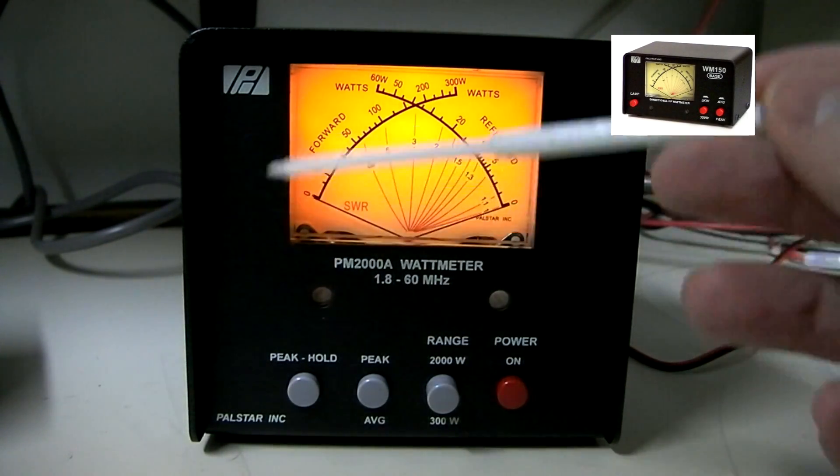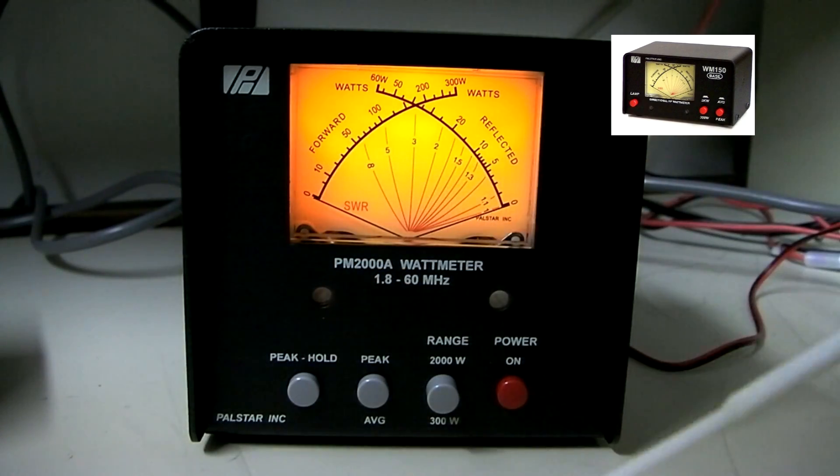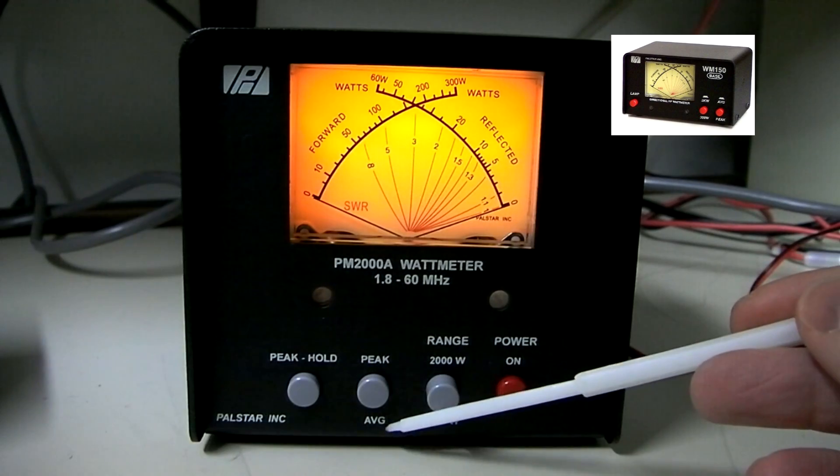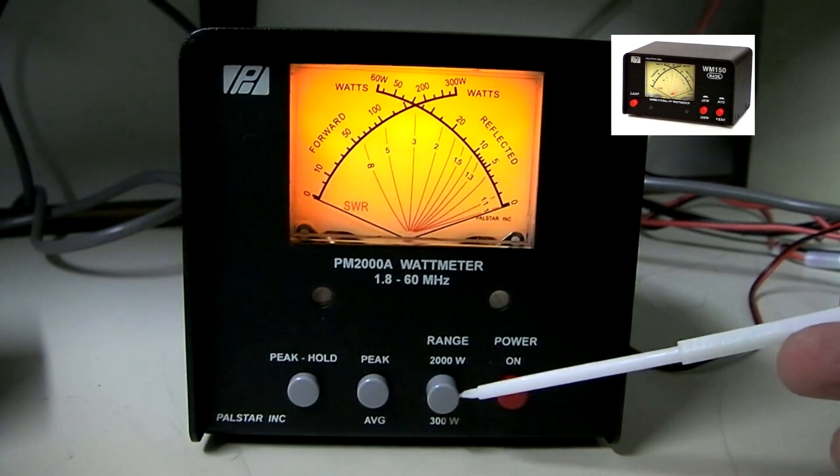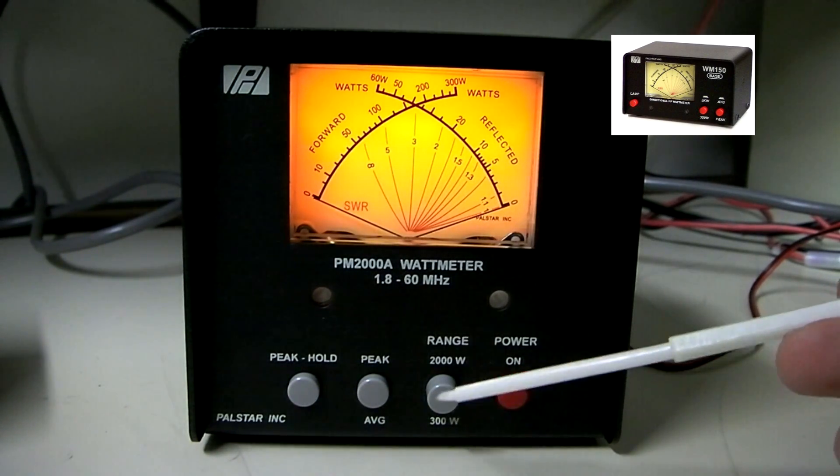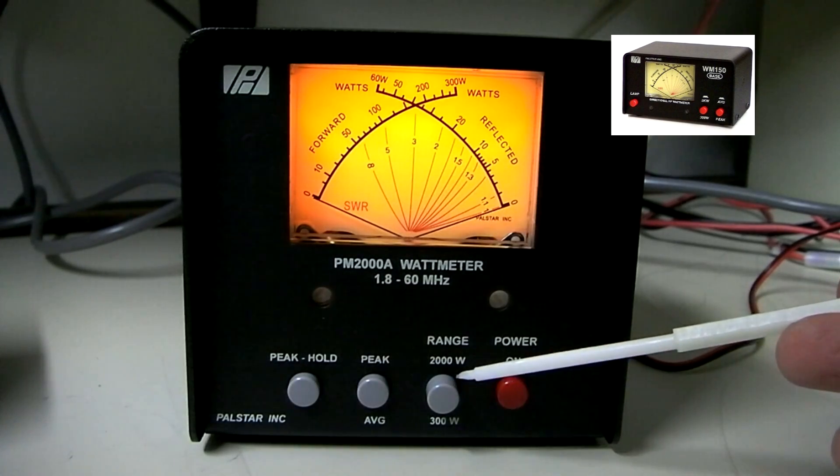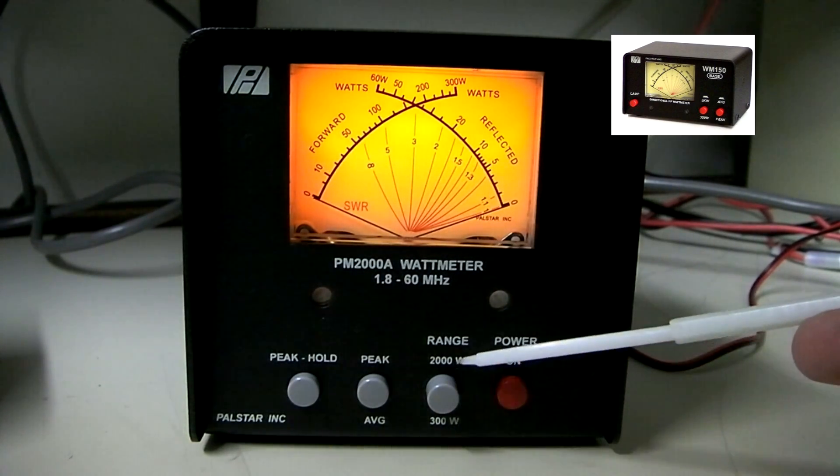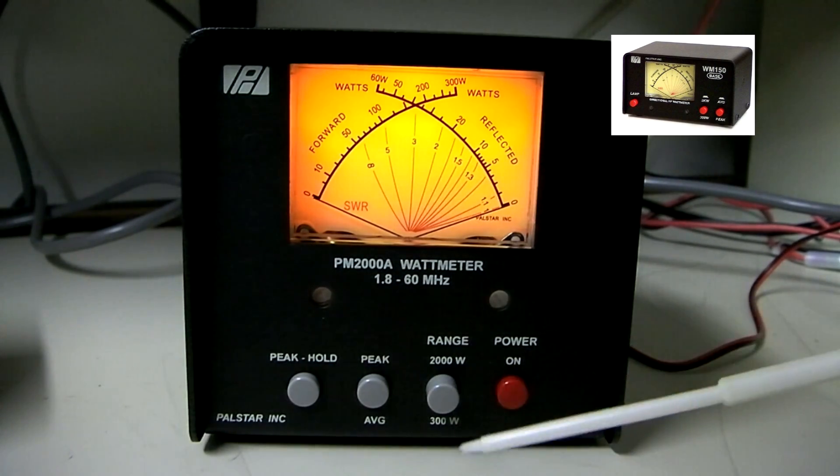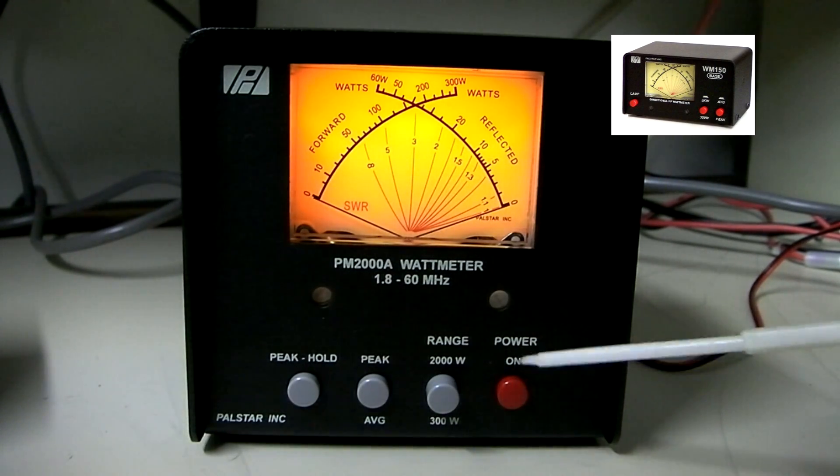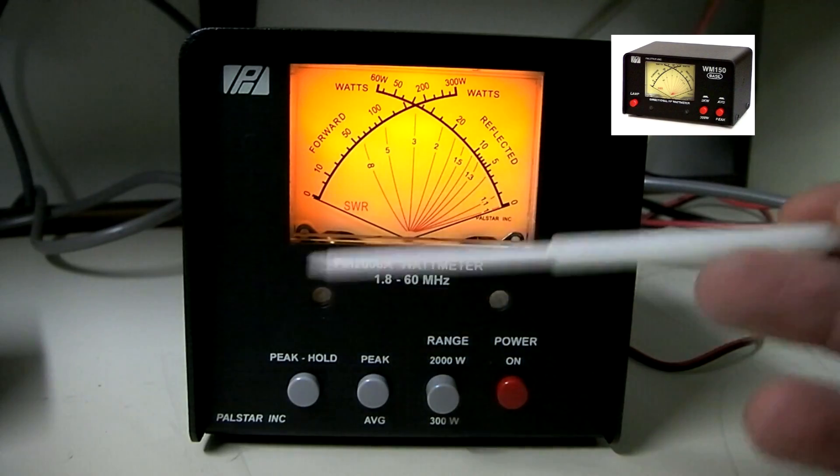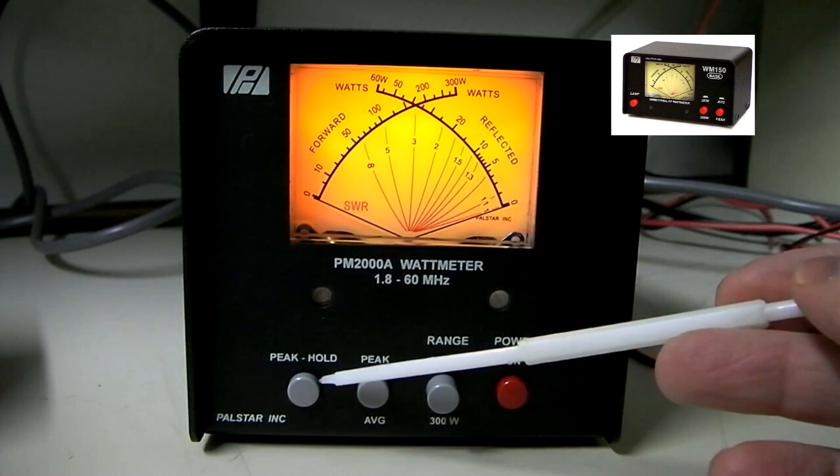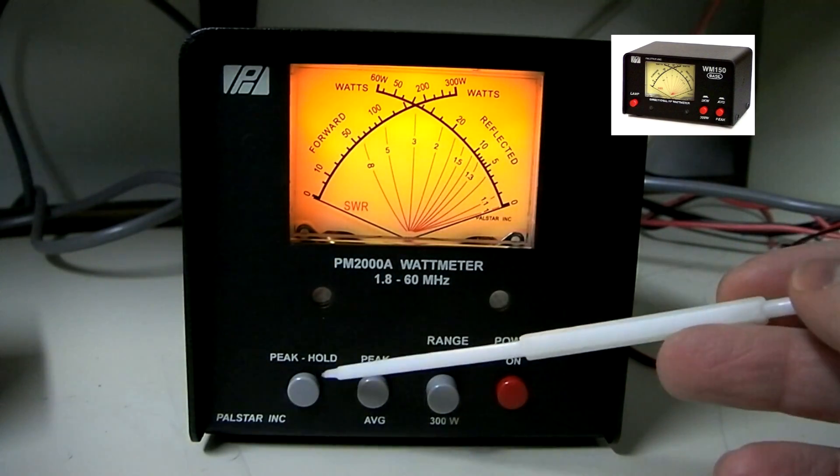It was a little bit different with the layout. They had the meter here and the buttons on either side. The previous meter had a peak and average option. The watt range on the previous meter was 300 watts and 3 kilowatts. On this meter, it's a 300-watt scale and a 2,000-watt scale. The power button's in the same place. The one new thing that they have added to this is they've added a peak hold option.